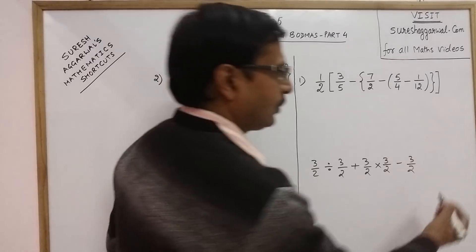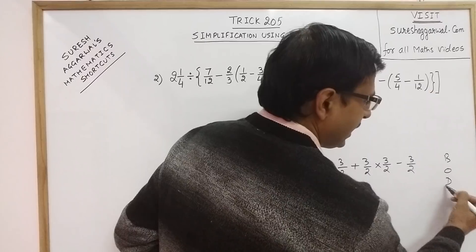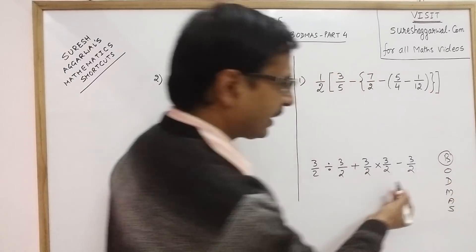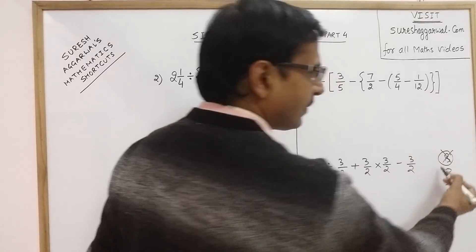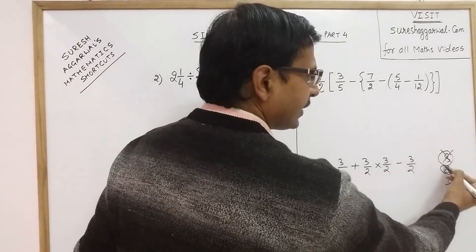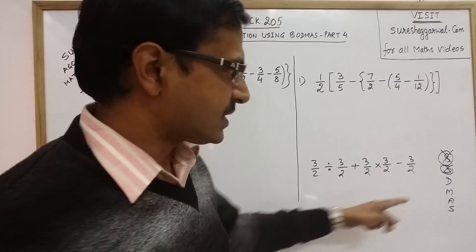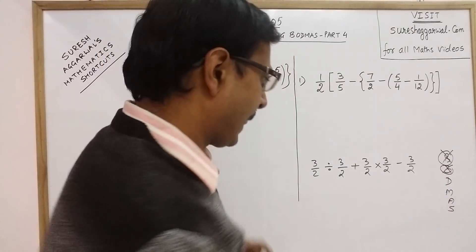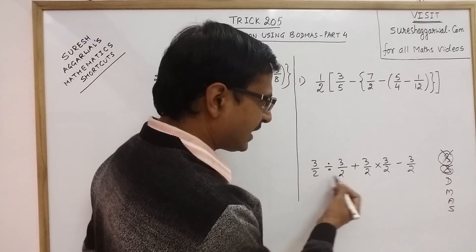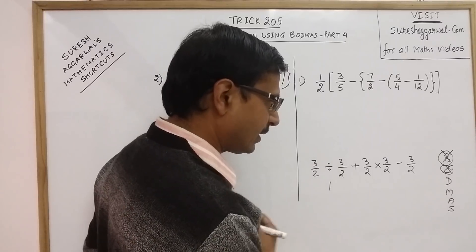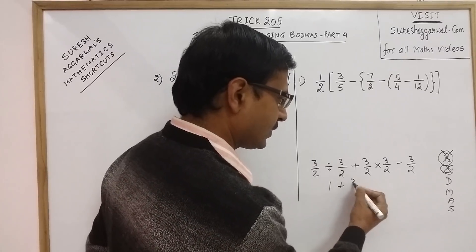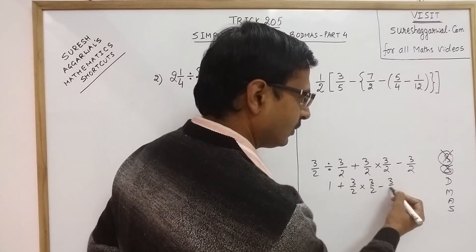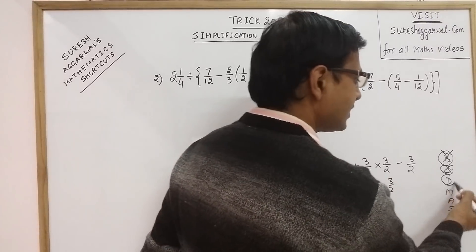We have BODMAS — there is no bracket here, so we skip that step. O stands for 'of' — there is no 'of' here, so we skip that step also. Now we come to Divide. When two same things are divided, you get the result as 1, so we have 1 plus 3/2 × 3/2 minus 3/2. The first operation of division is done.